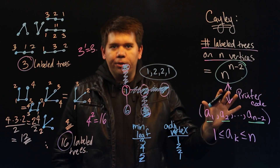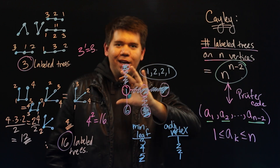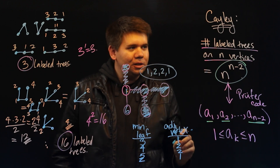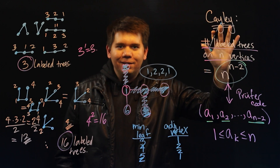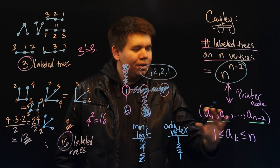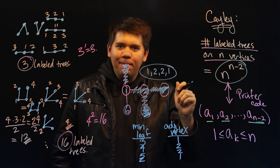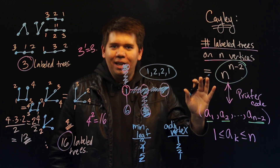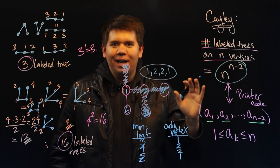What's incredible is that every tree has a unique Prüfer code, and given a Prüfer code you can go back and recover the tree. So there's a one-to-one correspondence between labeled trees on n vertices and these codes. Having counted the codes to be n^(n−2), this demonstrates that the number of labeled trees on n vertices is n^(n−2) as well.